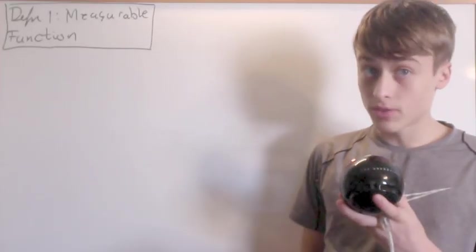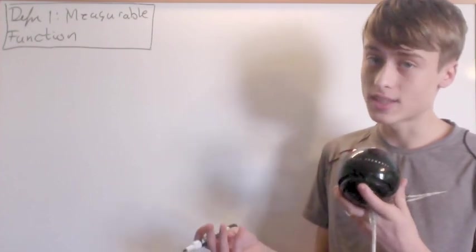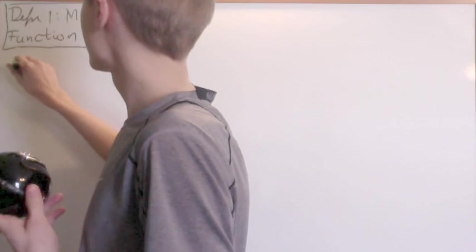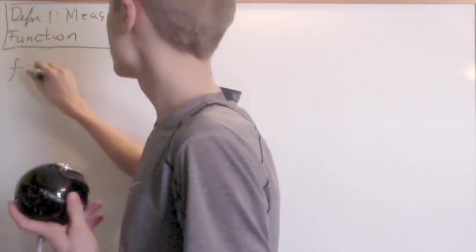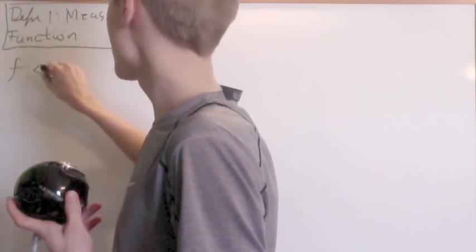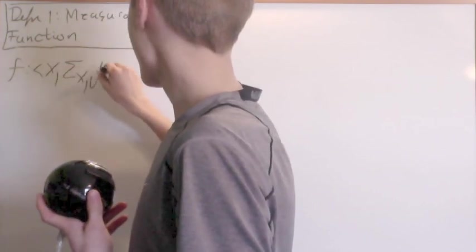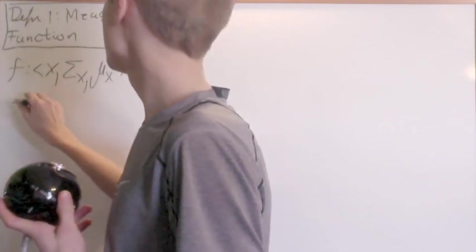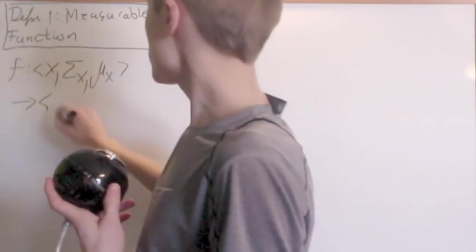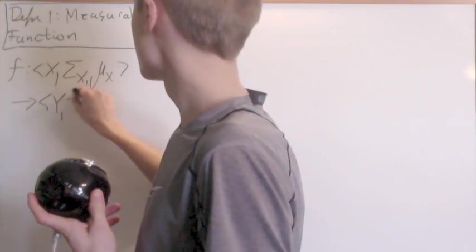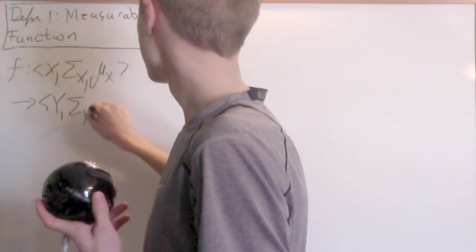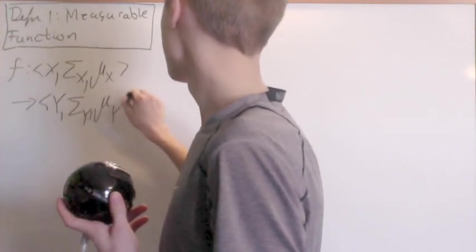A measurable function is the measure theory equivalent of a continuous function in topology. So, a function f that takes you from a measure space x, sigma x, mu x, and it'll bring you into another measure space y, sigma y, mu y. It's called measurable.